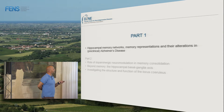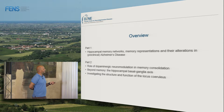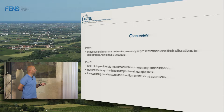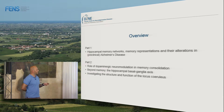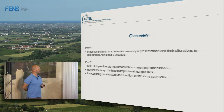In the first part I will talk about hippocampal memory networks and memory representations and how they are altered in Alzheimer's disease. In the second part it will be dopaminergic neuromodulation and its role in memory, particularly memory consolidation — but also beyond memory, looking at the interaction between the hippocampus and basal ganglia, and how we can investigate neurodegeneration in the locus coeruleus in the preclinical phase of Alzheimer's disease.